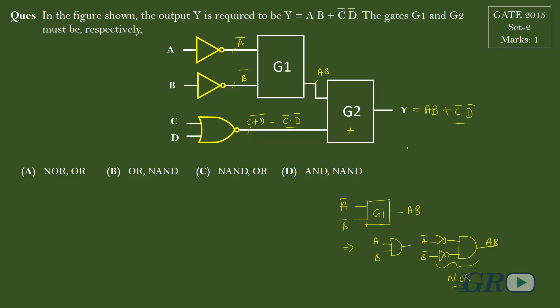So our G1 will be a NOR gate and G2 will also be a NOR gate.